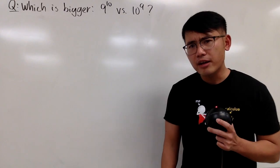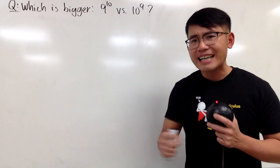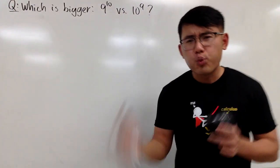Let me ask you guys this: Are you tired of this kind of question, where they just switch the base and the exponent and ask you which one's bigger? In this situation, we have 9 to the 10th power and the other one is 10 to the 9th power. Which one's bigger?